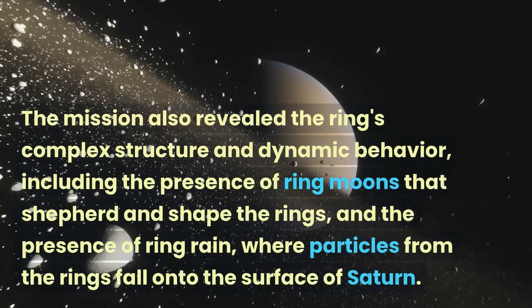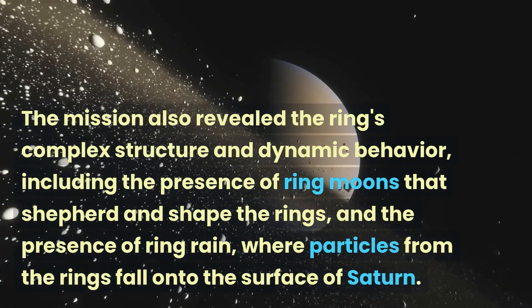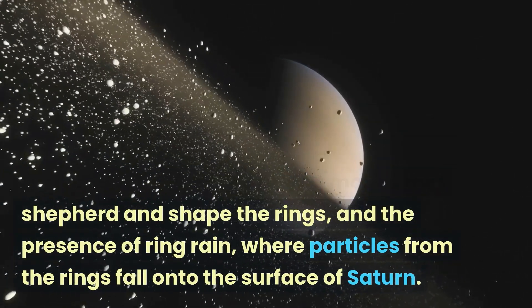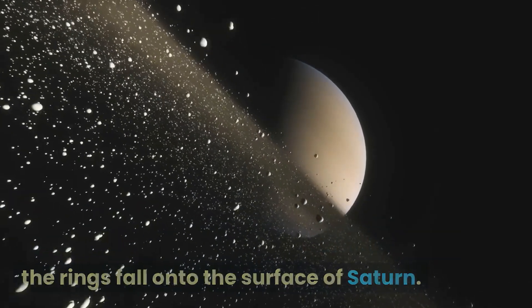The mission also revealed the ring's complex structure and dynamic behavior, including the presence of ring moons that shepherd and shape the rings, and the presence of ring rain, where particles from the rings fall onto the surface of Saturn.